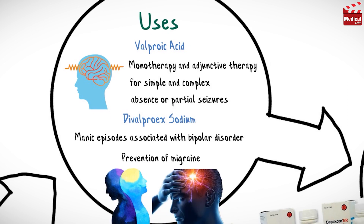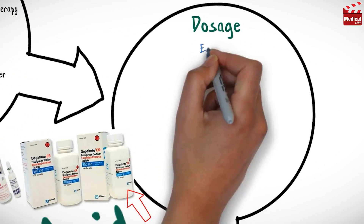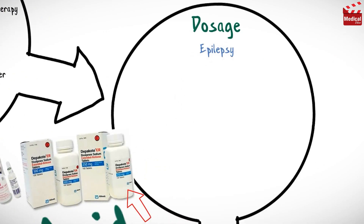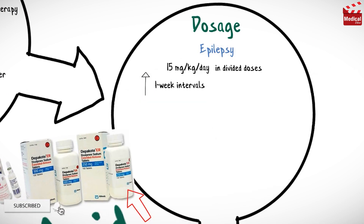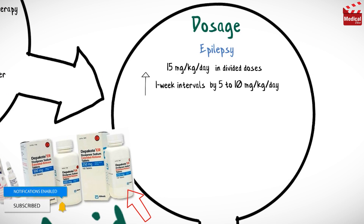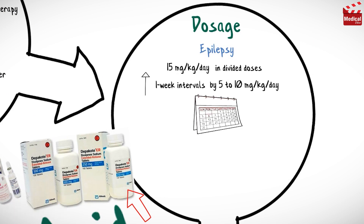The usual dosage of valproic acid for epilepsy is 15 mg per kg per day in divided doses. The dose can be increased at one-week intervals by 5-10 mg per kg per day until seizures are controlled.